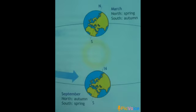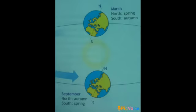In March and September, no part of the earth tilts more towards the sun, so both hemispheres get the same amount of sunshine. In March, the northern hemisphere has spring and the southern hemisphere has autumn. In September, the north has autumn and the south has spring.